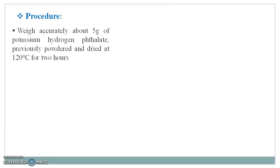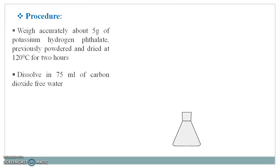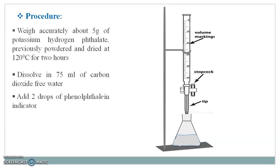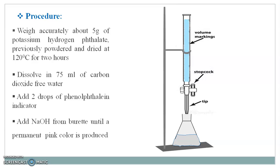For the standardization procedure, you have to accurately weigh about 5 grams of potassium hydrogen phthalate, which is previously powdered and dried at 120 degrees centigrade for 2 hours. Transfer it into a conical flask and dissolve it in 75 ml of carbon dioxide free water, then add 2 drops of phenolphthalein indicator. Set up a burette attached to a burette stand and fill it with the prepared sodium hydroxide solution.